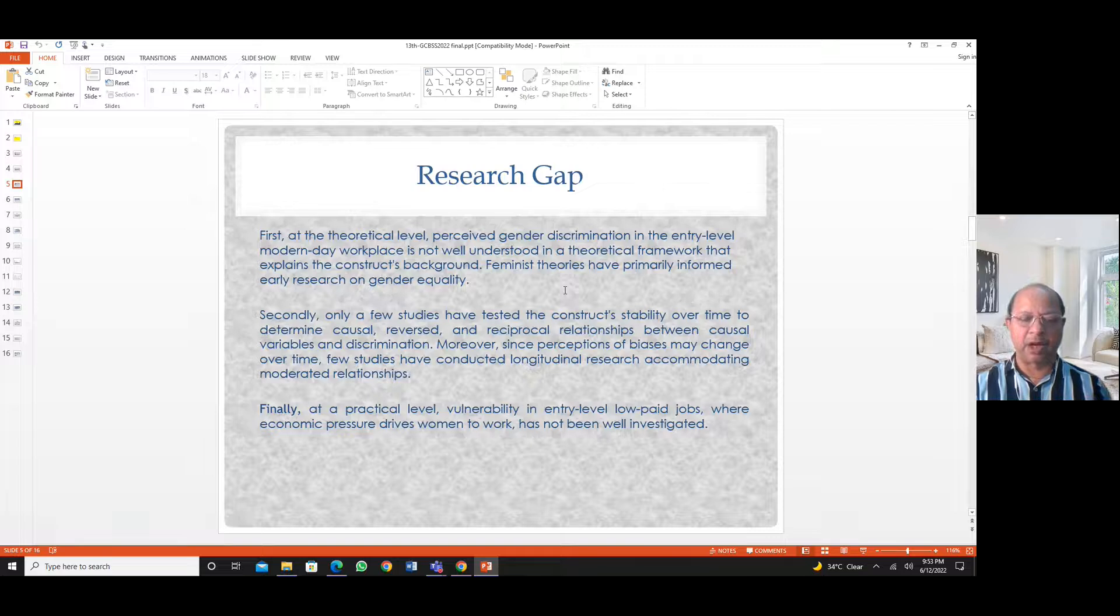We came up with these aims based on the research gaps that were identified. First, at the theoretical level, perceived gender discrimination—we are saying not that there is gender discrimination, but this is perceived. It may or may not exist, but women may perceive that there is gender discrimination in the entry-level jobs in modern day workplaces. And the theoretical background, as we said, is in the vulnerability theory itself.